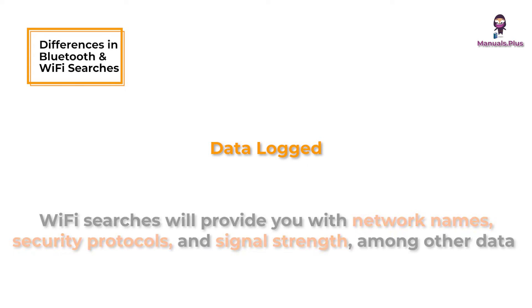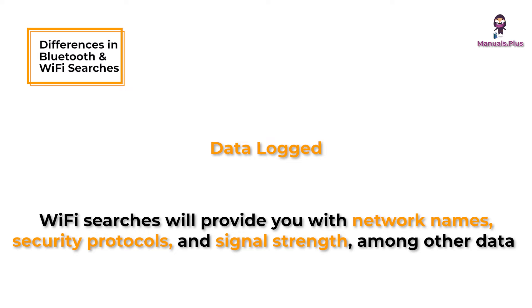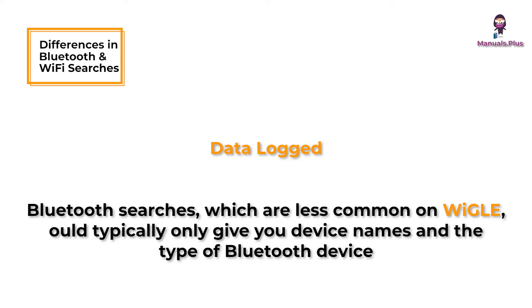Data logged: Wi-Fi searches will provide you with network names, security protocols, and signal strength, among other data. Bluetooth searches, which are less common on Wigle, would typically only give you device names and the type of Bluetooth device.